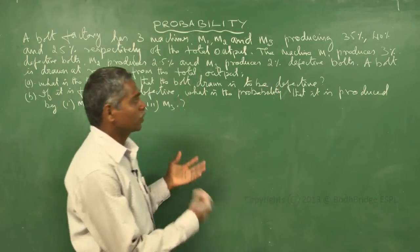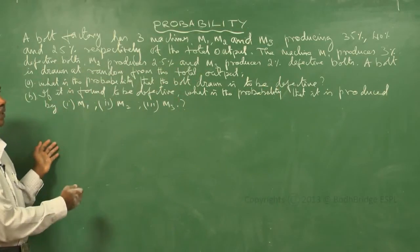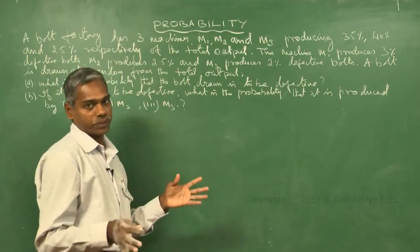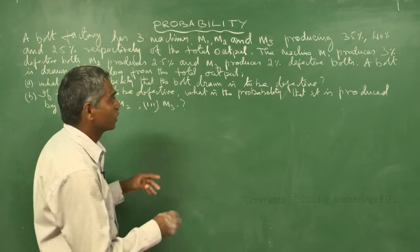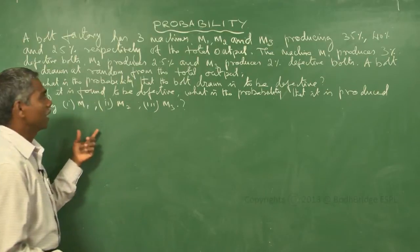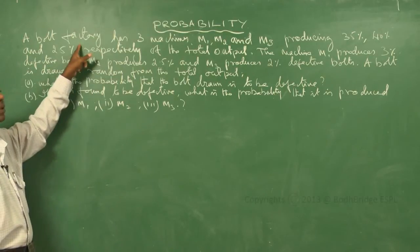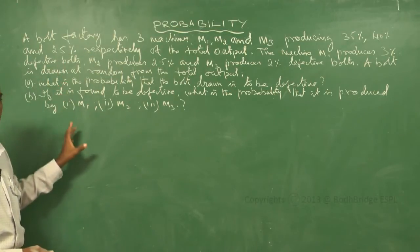After producing from the 3 machines, we combine all the outputs together and select one bolt — that is, one item at random.